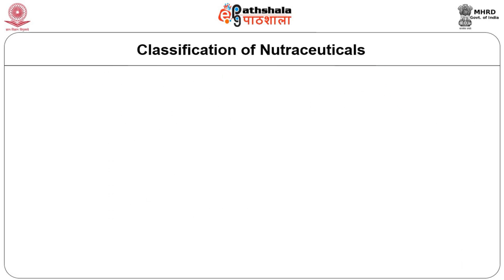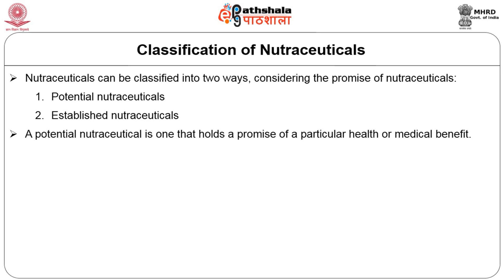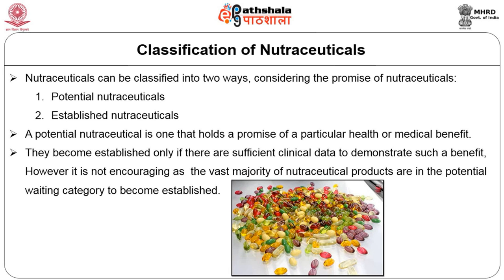Now you will learn the classification of nutraceuticals. Nutraceuticals can be classified into two types: potential nutraceuticals and established nutraceuticals. A potential nutraceutical holds promise of a particular health or medical benefit. They become established only if there are sufficient clinical data to demonstrate such a benefit. Currently, the vast majority of nutraceutical products are in the potential category waiting to become established.